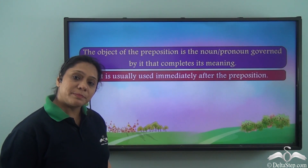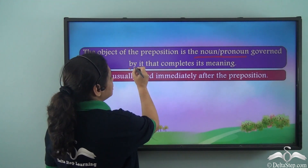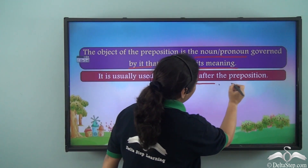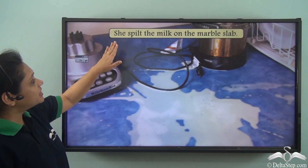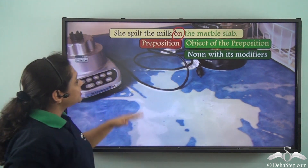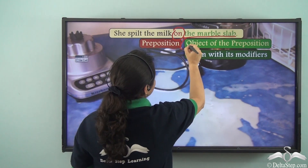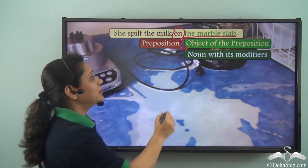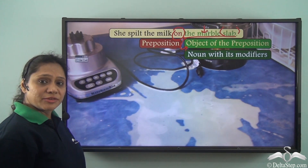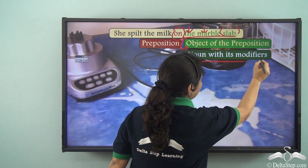So what is the object of a preposition? The object of the preposition is the noun or the pronoun governed by the preposition so that it completes its meaning. It is usually used immediately after the preposition. For example: 'She spilled the milk on the marble slab.' The preposition is 'on.' She spilled the milk on what? The marble slab. So 'the marble slab' is the object of the preposition — a noun with its modifiers.